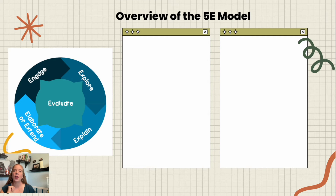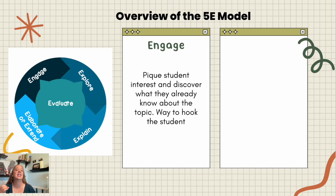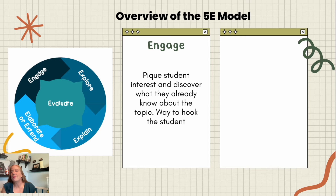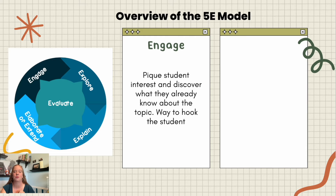The 5E model has five different phases, and although they can be done in different orders, we typically start with the engage phase. This is where you pique the students' interest and discover what they already know about the topic. It's a way to hook the students — many times done through some type of phenomenon — and it takes only about five to ten minutes. You don't want to spend a whole class period on this; it should really just be an introduction activity.